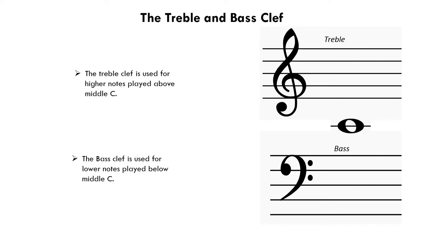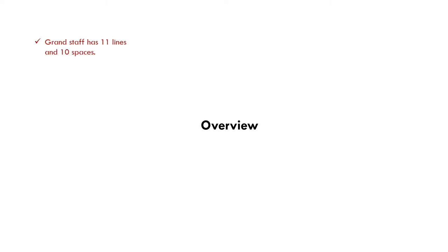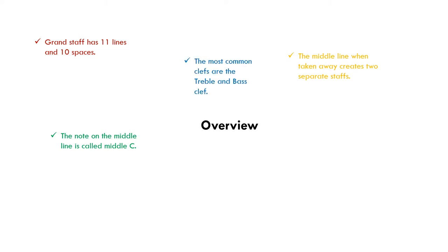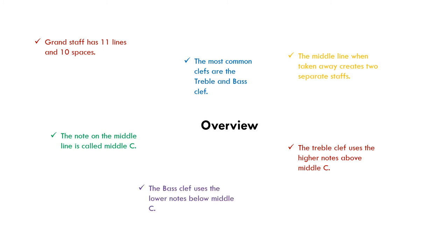Now we can work out what notes we can use from where middle C sits in both staffs. The grand staff has 11 lines and 10 spaces. The note set on the middle line of the grand staff is called middle C. The two most common clefs are the treble clef and the bass clef. The staff above middle C uses a clef called the treble for the higher notes. The staff below middle C uses a clef called the bass for the lower notes.